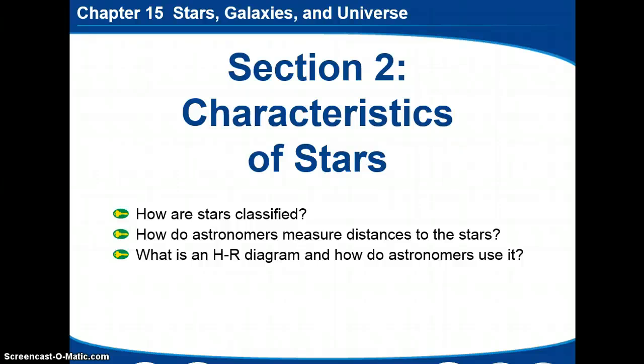Hey guys, here we are talking about section 2 of chapter 15, looking at the characteristics of stars. We want to find out how do we classify stars, how do we measure the distances to them, and what is an HR diagram called the Hertzsprung-Russell diagram. How do we use it?